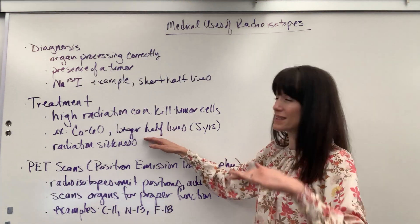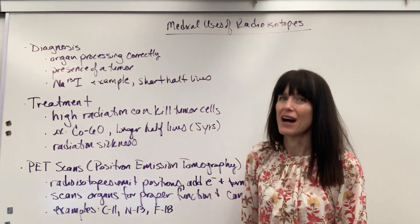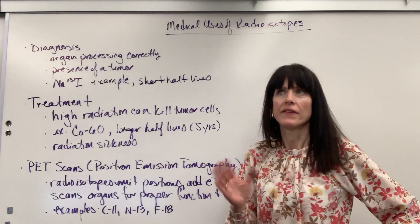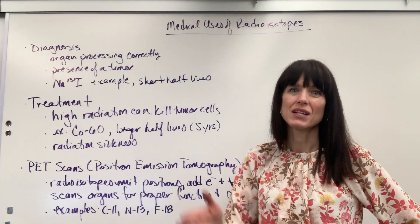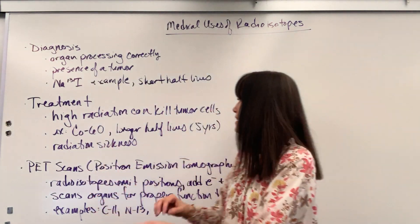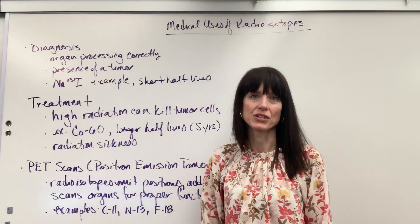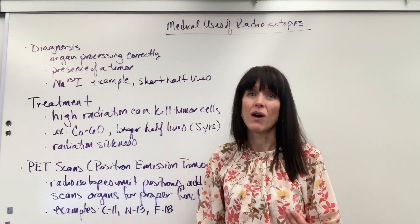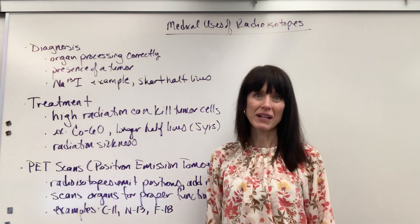One disadvantage is that treatment isotopes have longer half-lives. For example, cobalt-60 has a half-life of about 5.4 years. So that radiation decreases by half repeatedly — it takes five years for half of that radiation to leave a person's body, meaning you have that radiation in your body for a long time, and that can cause sickness, called radiation sickness.